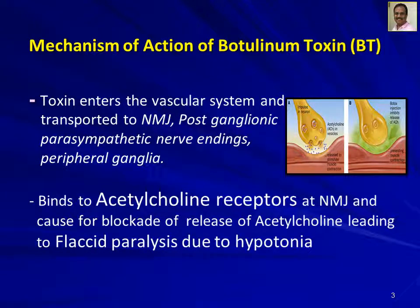Regarding the mechanism of action: after infection, the botulinum toxin is produced and enters the neuromuscular junction through the vascular system. It reaches the post-ganglionic parasympathetic nerve endings and peripheral ganglia, where it binds to acetylcholine receptors at the neuromuscular junction and causes a blockade of acetylcholine release, which finally leads to muscle paralysis due to hypotonia. The type of paralysis produced is known as flaccid paralysis, due to lack of acetylcholine to contract the muscles.